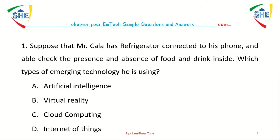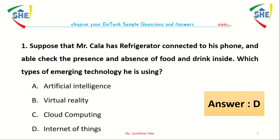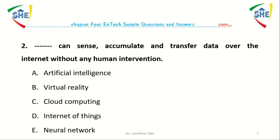Question number one: Suppose that Mr. Jala has a refrigerator connected to his phone and is able to check the presence and absence of food and drink inside. Which type of emerging technology is he using? A. Artificial intelligence, B. Virtual reality, C. Cloud computing, D. Internet of Things.